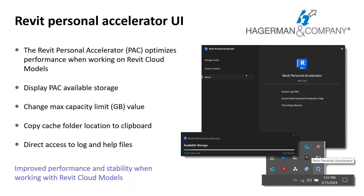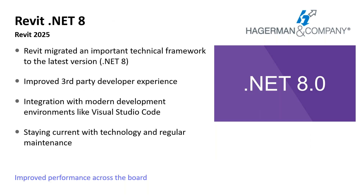Revit can now be updated from manage.autodesk.com when new features are delivered between Revit releases, with several fixes focused on reliability and stability including the system tray, command dialog, and UI settings. Revit uses Microsoft's .NET framework to manage UI dialogues, facilitate interactions with Windows, and operate the Revit API. To stay current with technology, Revit has migrated to .NET 8. This will lead to improved performance across the board and an improved third-party developer experience, with better integrations with modern development environments like Visual Studio Code.